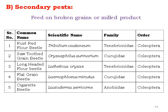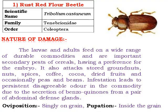The secondary pests feed on broken grains and meal products. Examples include the red flour beetle, sawtooth grain beetle, long-headed flour beetle, and flat grain beetle — all iron beetles. Most of these are from Order Coleoptera. The confused flour beetle, Tribolium castaneum, is the rusted flour beetle from Coleoptera.